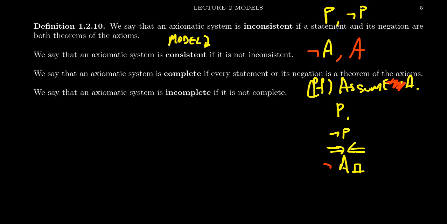Another important concept is completeness. We say an axiomatic system is complete if every statement or its negation is a theorem of the axioms — every statement is either true or false. When axiomatics get too complicated, we get incomplete statements that are independent of the previous ones. In a complete system, up to isomorphism, there is only one model. The FIFO theory we've developed is actually a complete model.